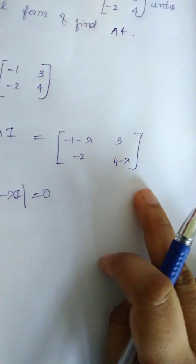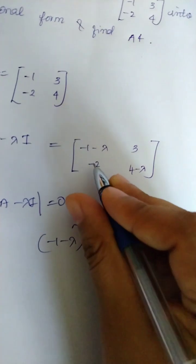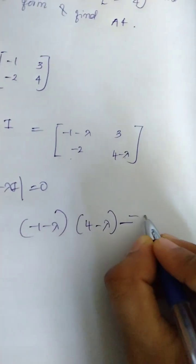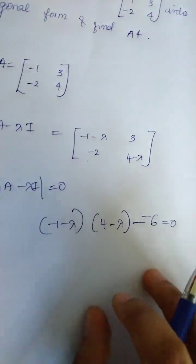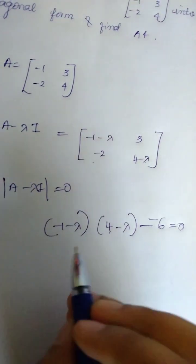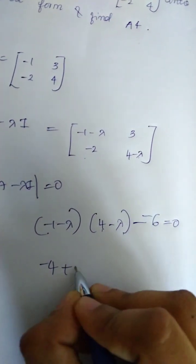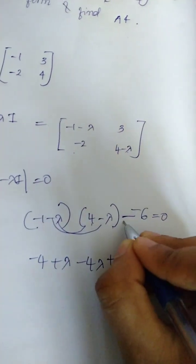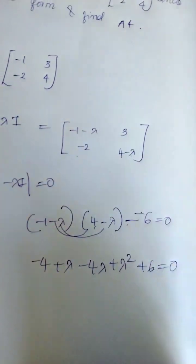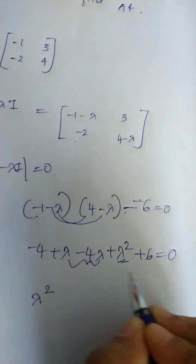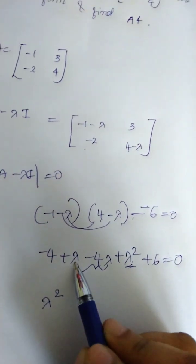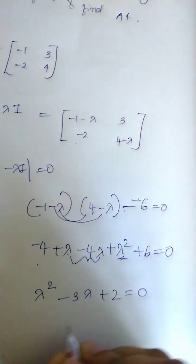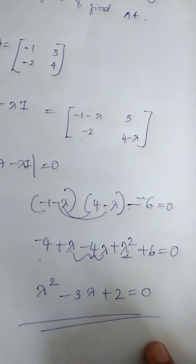Determinant of A minus lambda I equal to 0. So the determinant is 0. We expand: minus 1 minus lambda, into 4 minus lambda, minus 3 into minus 2. That gives minus 1 into 4 minus 4 minus 1 into minus lambda, plus lambda into 4 minus 4 lambda, plus lambda squared, plus 6 equal to 0. Arranging terms: lambda squared minus 3 lambda minus 4 plus 6 equal to 0.